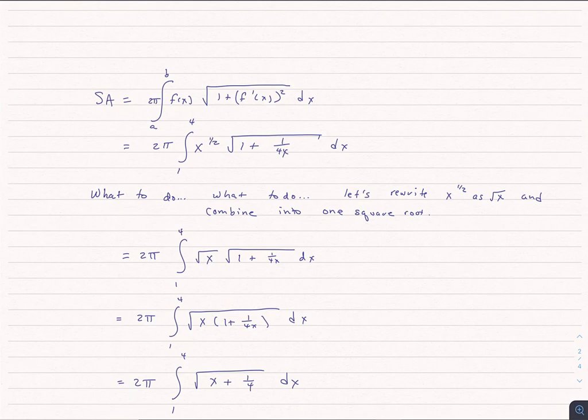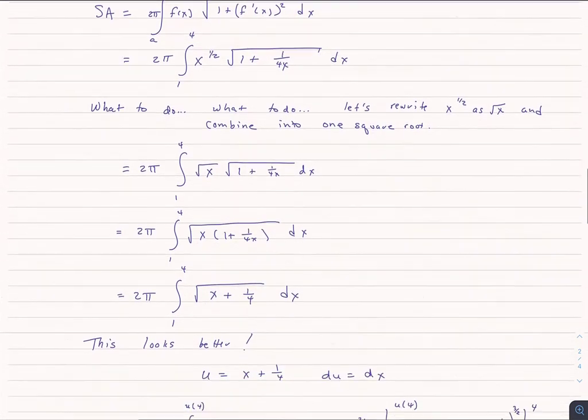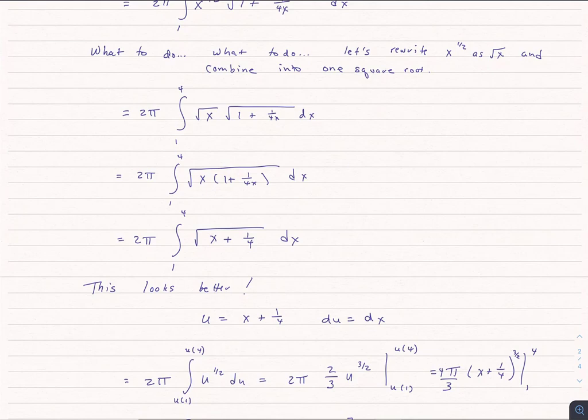Now if I look at this, I think this is a really straightforward u substitution. And so it is. u is just equal to x plus 1 fourth, du is equal to dx. I go ahead and integrate. I change it back to the x world, and I plug in my 1 and my 4, and I get this for an answer.